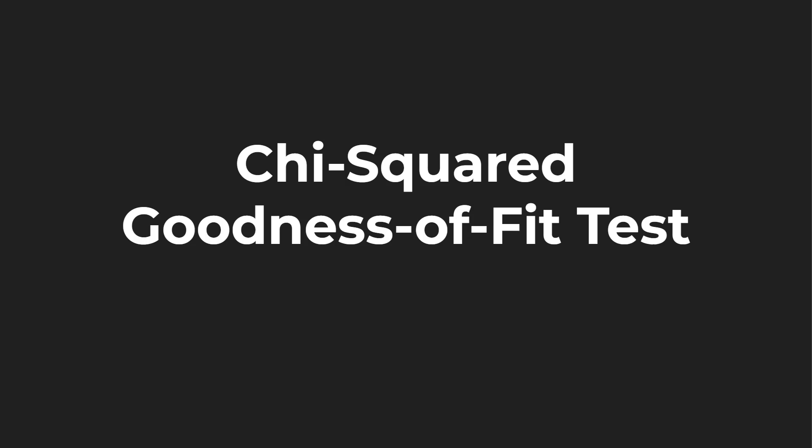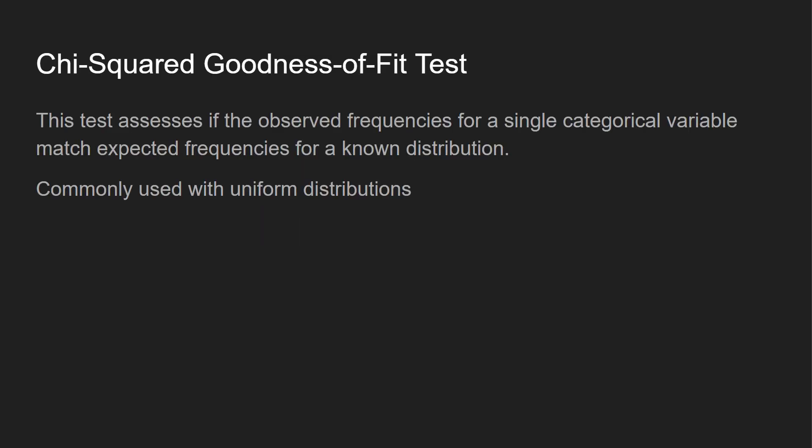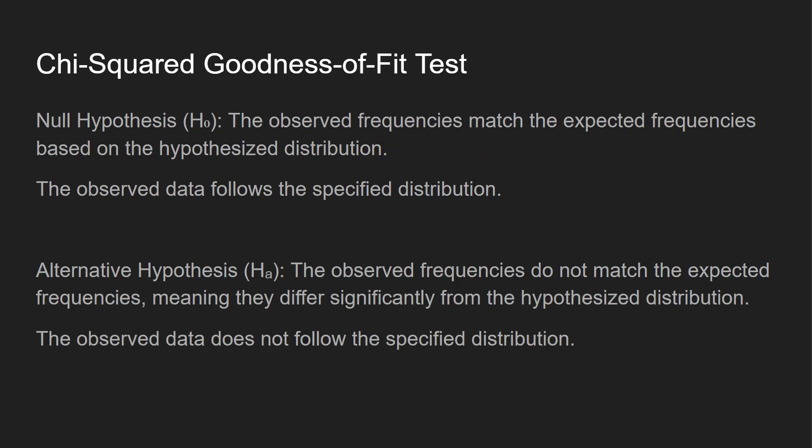The chi-squared goodness of fit test assesses if the observed frequencies for a single categorical variable match expected frequencies for a known distribution. This is also commonly used with uniform distributions, although it does allow for other distribution types. This example I'm going to go through on the slides is going to be a uniform distribution, and if you're not familiar with uniform distributions, I do have a video on the channel talking about it, but I think you should be able to grasp the concept with this example.